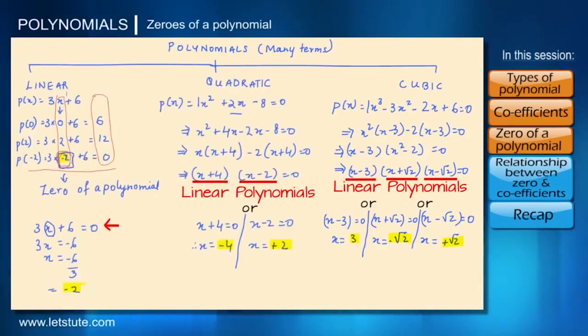By looking at this we can say when we have a linear polynomial degree 1, we can have one zero of a polynomial.